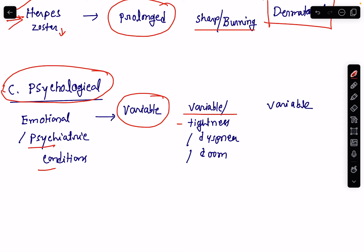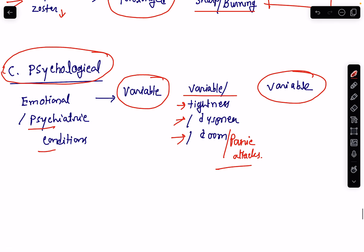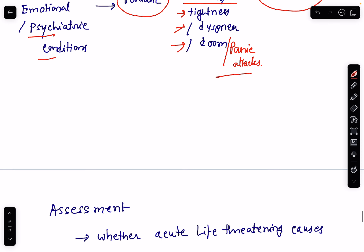Sometimes the patient will complain of tightness in the chest, dyspnea, and feeling of impending doom or panic attacks. The location is also variable. These are the various causes of non-cardiopulmonary chest pain.